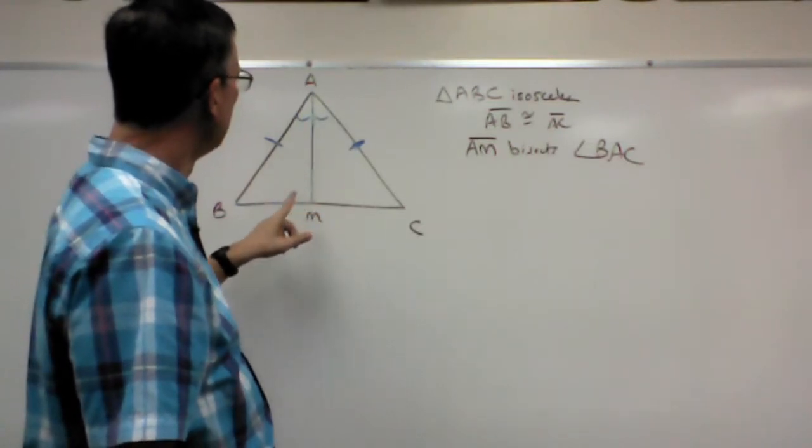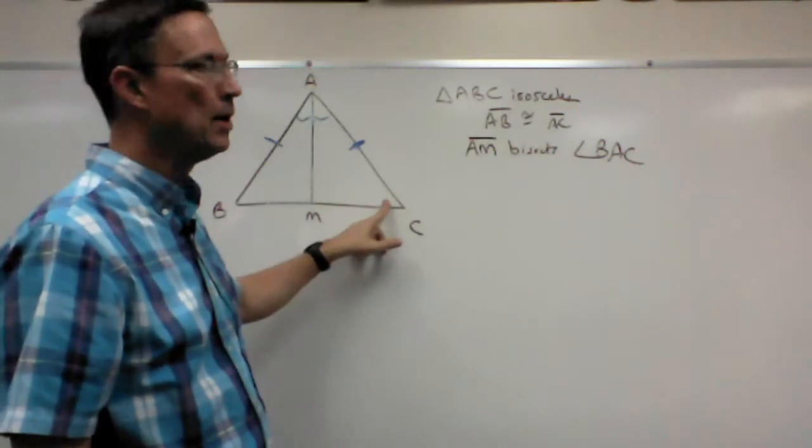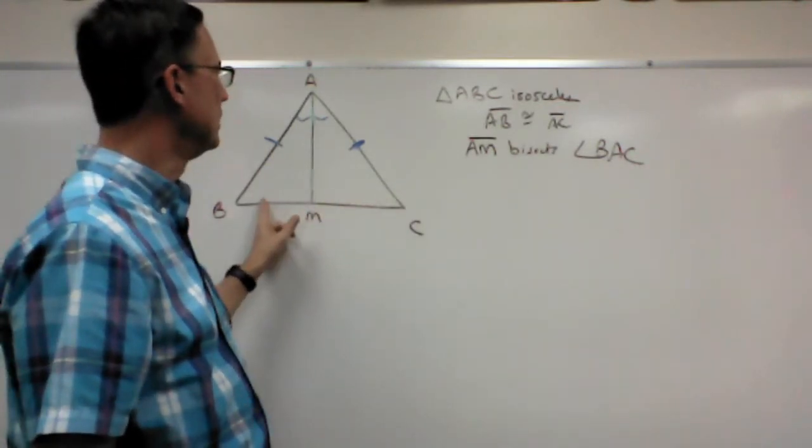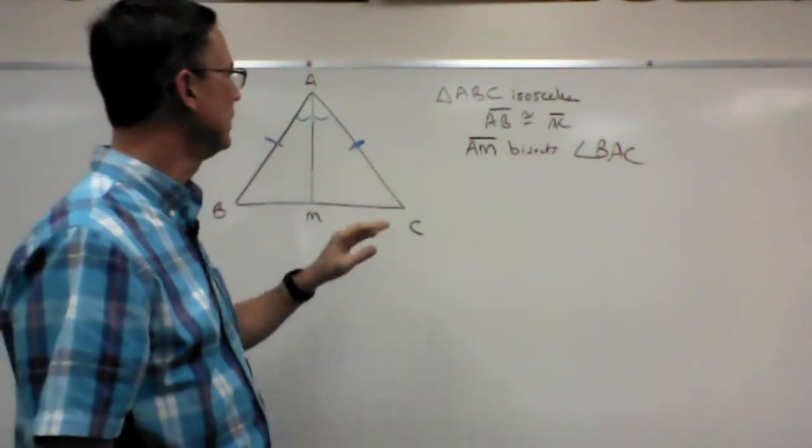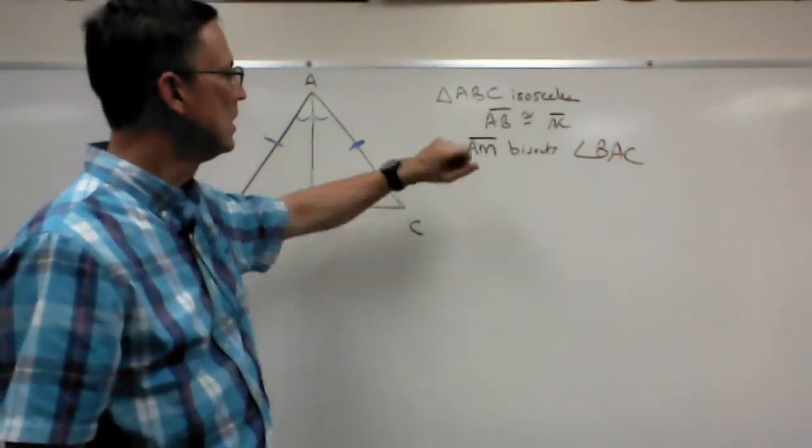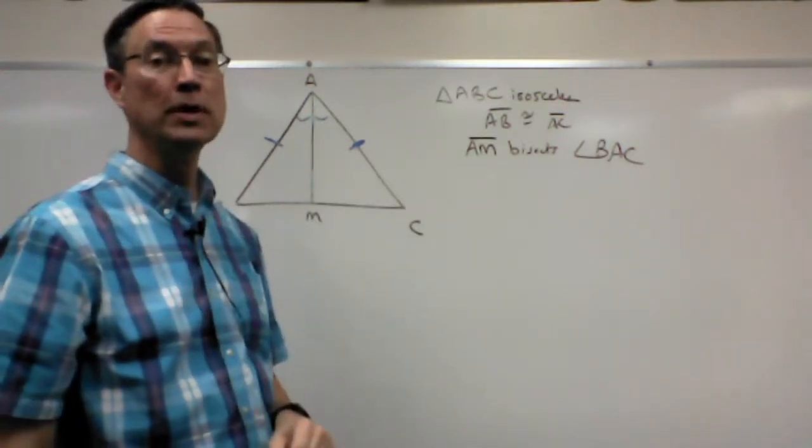Then, and we do know that this angle down here is congruent to this angle. That's also by definition of isosceles, but I don't know that we're going to use that in this proof. I think marking these two sides and then taking this information and marking these two angles as being congruent.